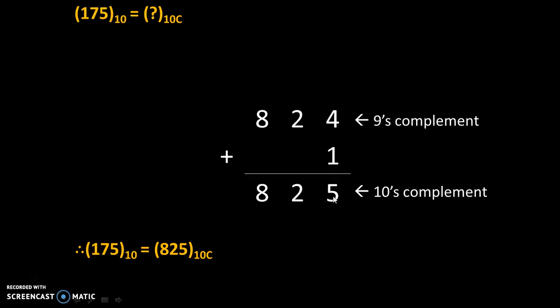4 plus 1 is 5, 2 as it is, 8 as it is. So 10's complement of 175 is 825. Therefore, 175 to the base 10 equals 825 to the base 10's complement.